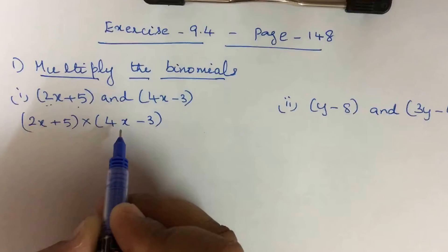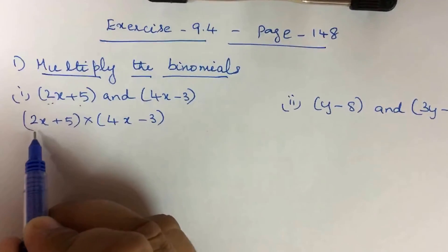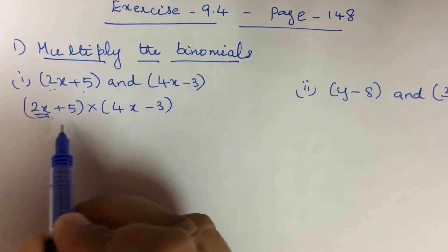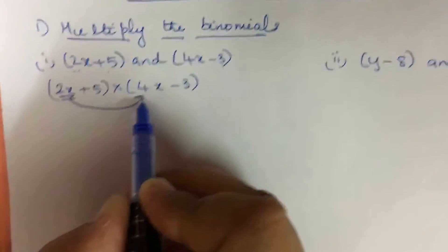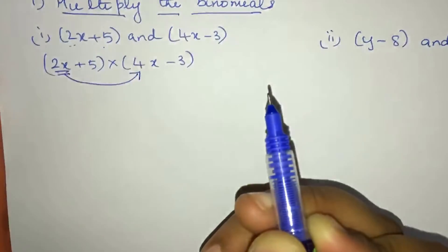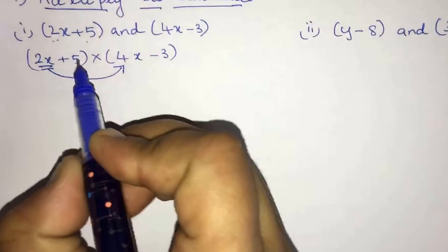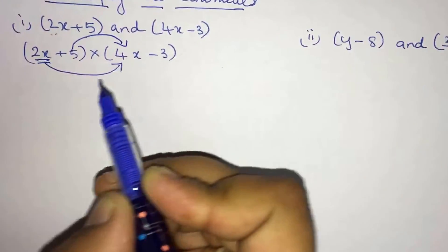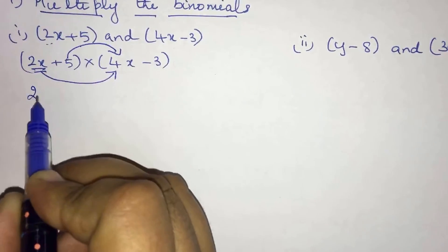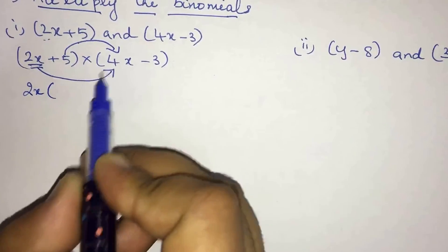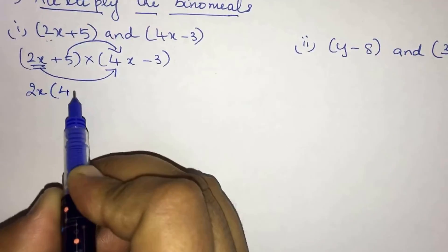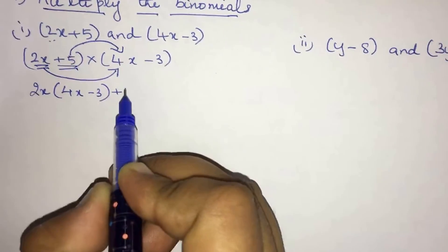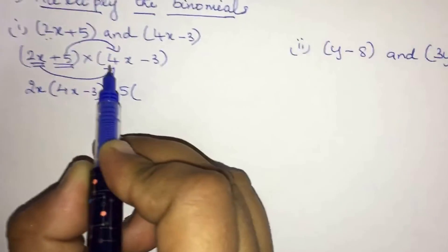How to multiply these two binomials: first take the term 2x, the first term, and multiply with this binomial. Then take the next term 5 and multiply with this binomial. So we take 2x first and multiply with (4x - 3), then take 5 and multiply with (4x - 3).